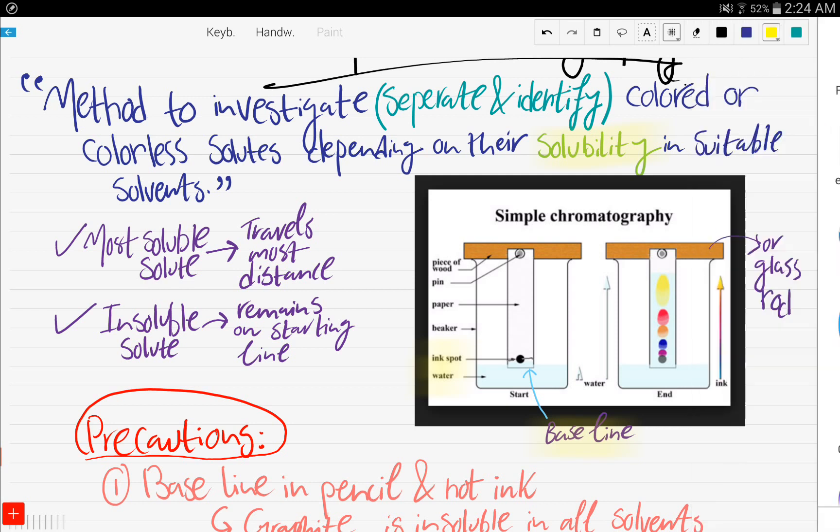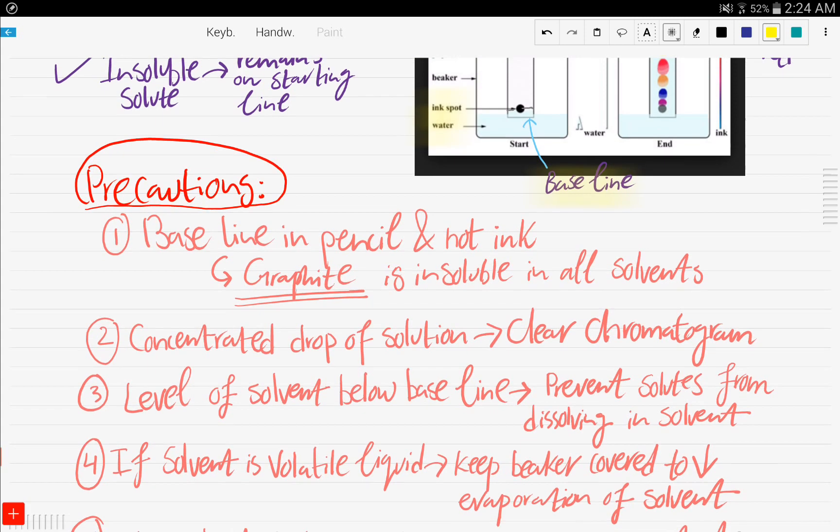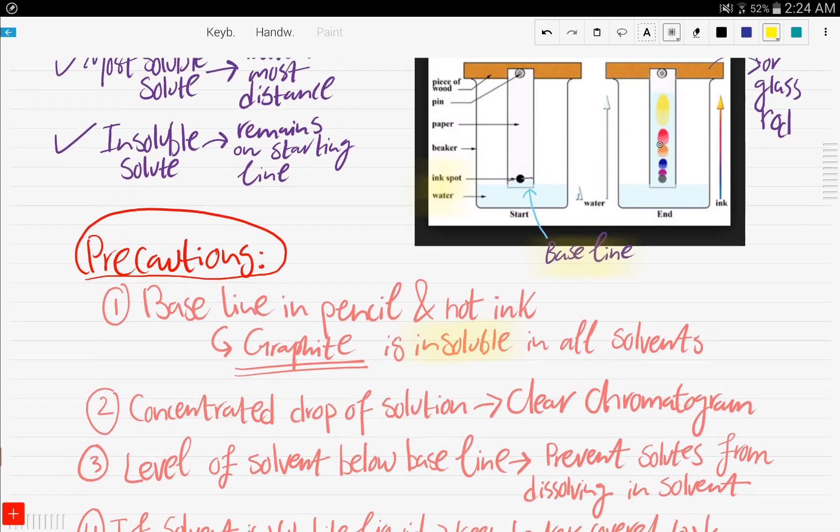Now, a few precautions that you need to put in mind when carrying out chromatography. The baseline should be in pencil and not in ink, this baseline, because graphite, which pencil is made of, is insoluble in all solvents. Number two, have a concentrated drop of the solution on the baseline in order for you to have a clear chromatogram. The more concentrated it is, the more clear the chromatogram is, and the more you're able to determine the relations between the solubility of the different solutes.